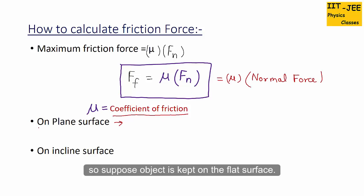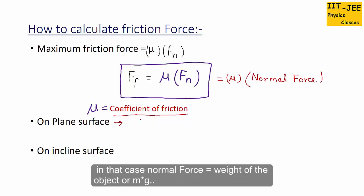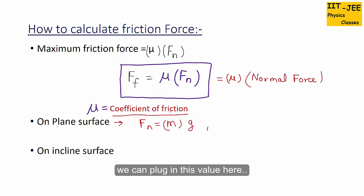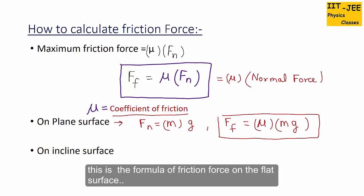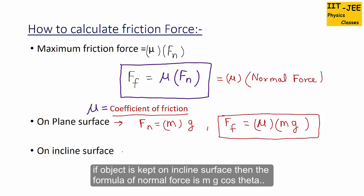The general formula is mu times normal force. If the object is kept on a flat surface, the normal force equals the weight of the object, or M times G. Plugging that in, friction force equals μ × M × G — this is the formula for friction force on a flat surface.